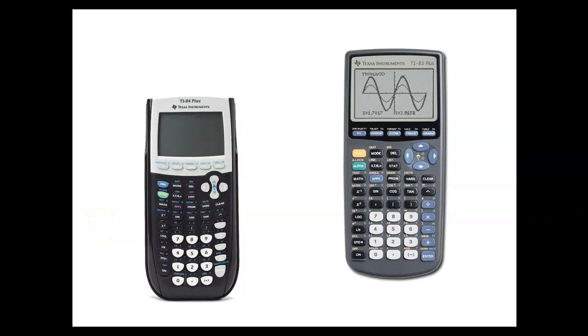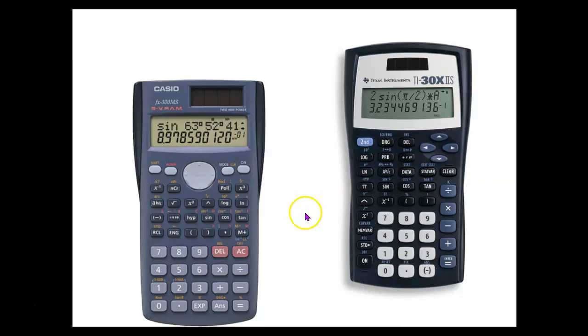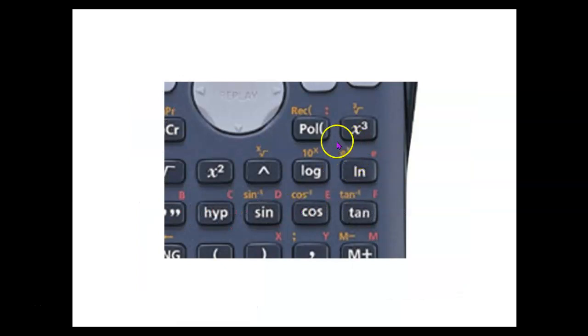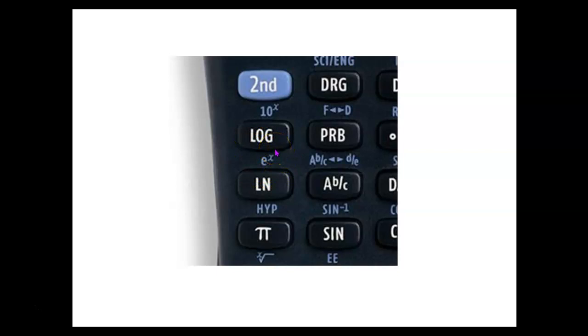Very often the function to evaluate e to the x is the second or shifted function for the button labeled LN. So if you can find on your calculator a button that says LN and then look right above that, that's where you might find e to the x. Now I have seen calculators that have e to the x right on one of the buttons, but on many of the most common models it's above the LN button because it is the inverse of the LN function.